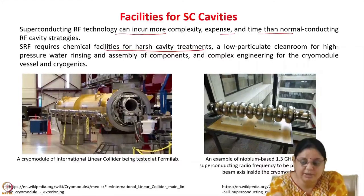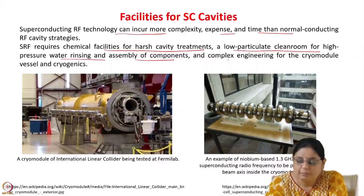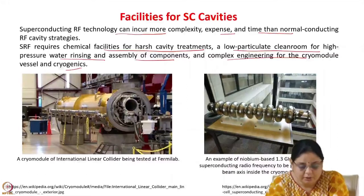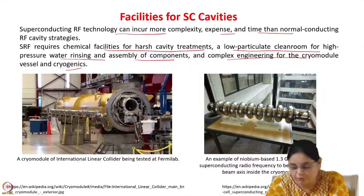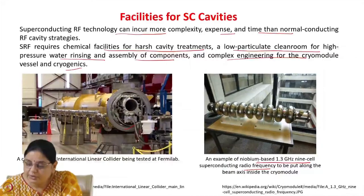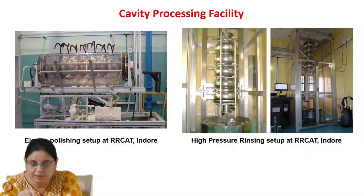They require chemical facilities for harsh chemical treatments, clean rooms, high-pressure water rinsing, assembly of components, and complex engineering for the cryomodule. This is a picture of the cryomodule for the International Linear Collider being tested at Fermilab. The cavity goes inside this cryomodule, whose function is to maintain the temperature in the cavity at 2 K or 4 K. This is an example of a niobium-based 1.3 GHz 9-cell superconducting cavity to be placed along the beam axis inside the cryomodule.